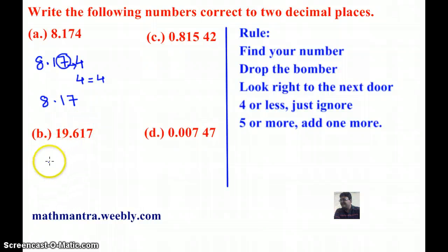Okay, let's start with the next example, 19.617. So, the number at the second decimal place is 1 and the next door number is 7 which is, of course, greater than 5.